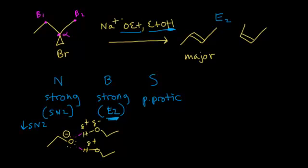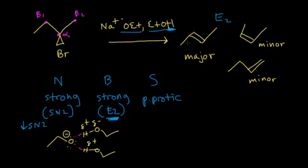We can also get a product from the beta 2 position, forming a double bond between the alpha and beta 2 carbon. This is a mono-substituted alkene — less stable than the di-substituted ones — so it's the most minor product. And even though there's a decreased chance for SN2, you will still get a minor SN2 product where the ethoxide anion attacks the chirality center with inversion, placing an oxygen with an ethyl group.